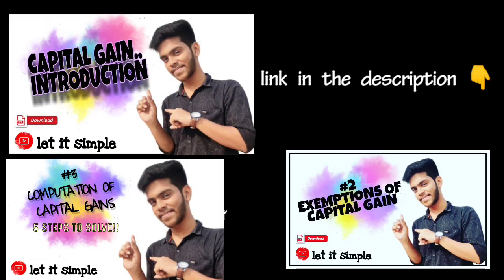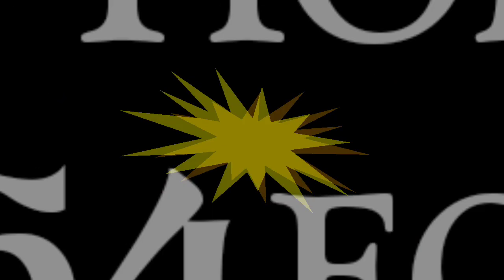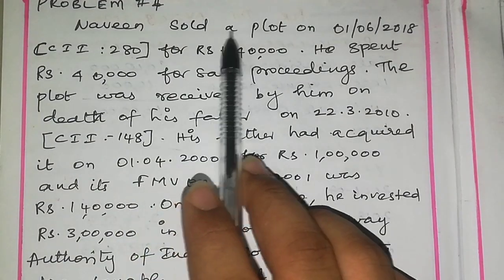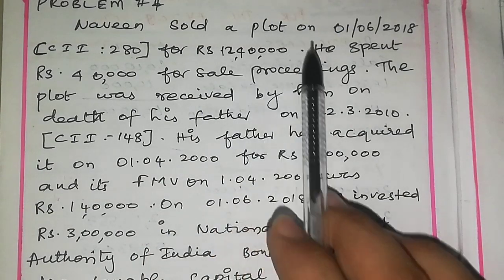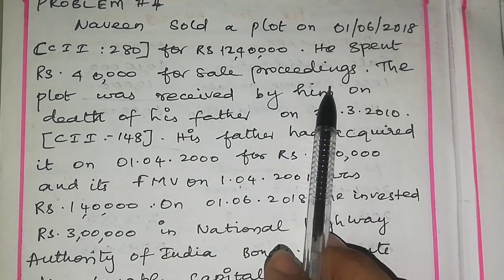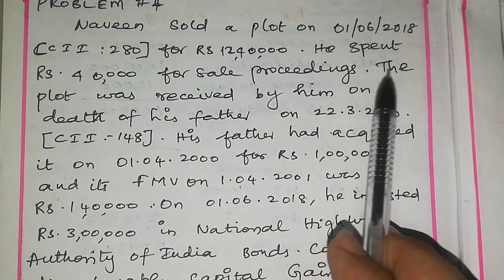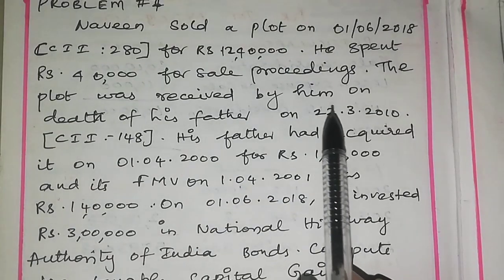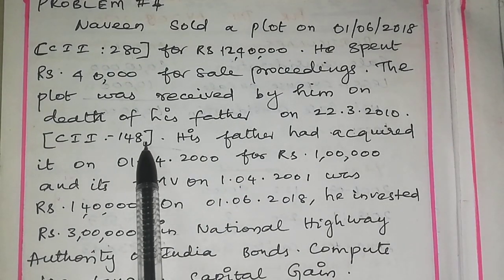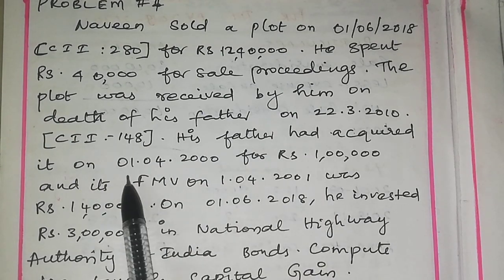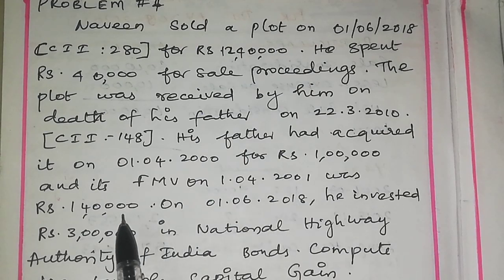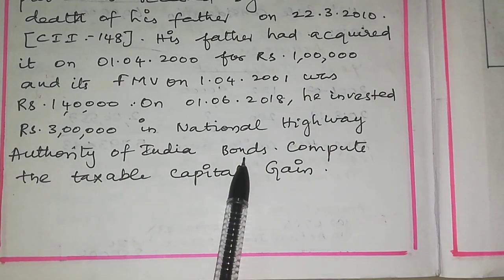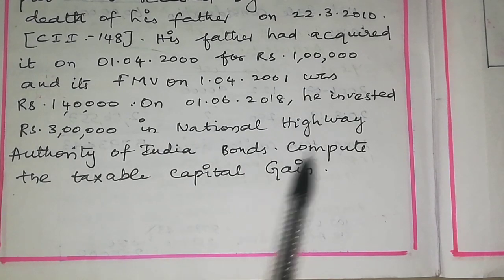We will get the introduction of capital gain and the format is in the description box. Naveen sold a plot on 1-6-2018 for Rs. 12,40,000. Sale consideration is Rs. 12,40,000. He spent Rs. 40,000 for sale expenses. This plot was received by him on the death of his father on 22-3-2010. His father acquired it on 1st April 2000 for Rs. 1,00,000 and its fair market value on 1-4-2001 was Rs. 1,40,000. On 1-6-2018, he invested Rs. 3,00,000 in National Highway Authority of India bonds. Compute taxable capital gain.